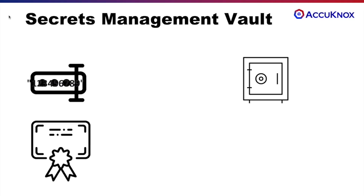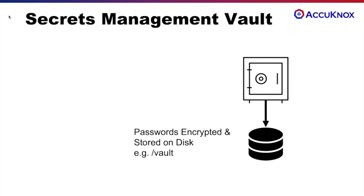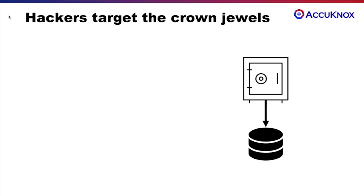So many organizations have secrets management projects to store passwords, tokens, and other credentials on tools like HashiCorp Vault — a free open-source version that you can run in your own cluster. Passwords are encrypted and stored on disk in a directory called /vault by default. That's great, but hackers are after these things.